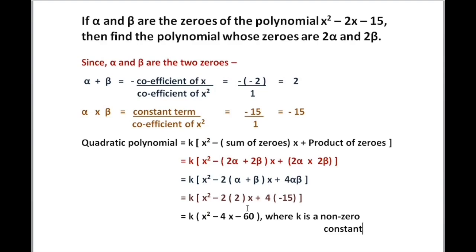Whatever question comes, sometimes you have to find 2 alpha plus 2 beta or alpha squared plus beta squared. As always, first find alpha plus beta and alpha into beta. Then manipulate according to the question. If you need to find a value, simplify as much as possible using these two results. If you need to find a polynomial, write the formula, substitute both zeros, and solve.